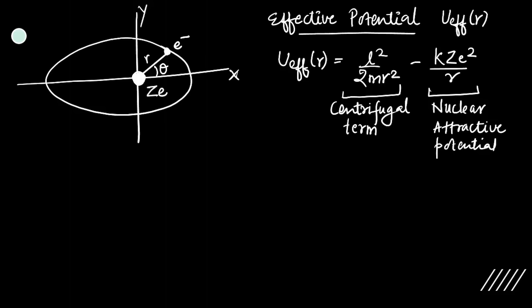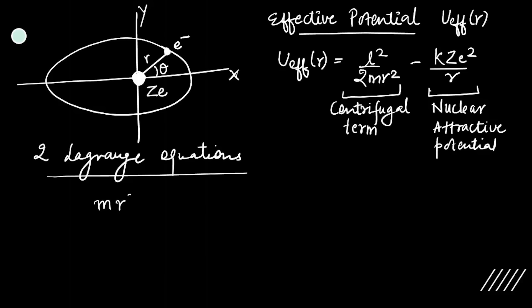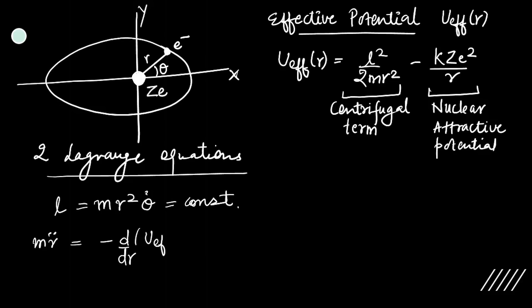Before starting, we should know the two Lagrange equations — these are the basic equations. The first is mR²θ̇ = L (angular momentum is constant). The second is mR̈ = -d/dR of U_effective.